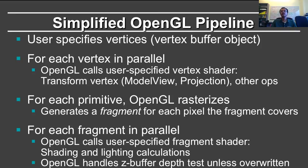For each primitive, OpenGL then rasterizes these transformed vertices and generates at least one fragment for each pixel the corresponding vertex covers. For each fragment in parallel, OpenGL calls the user-specified fragment shader, which then goes through shading and lighting calculations. OpenGL by default handles the z-buffer test by itself, but you can overwrite it.